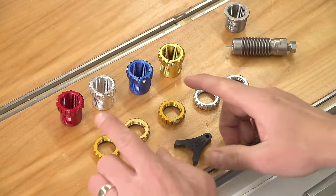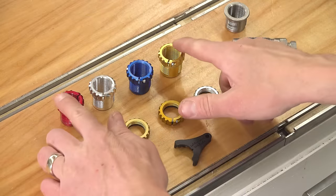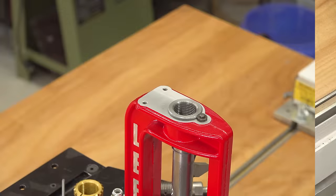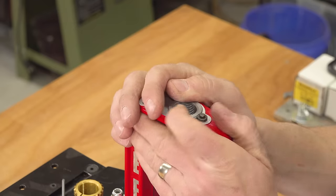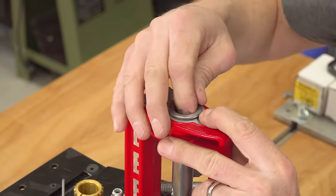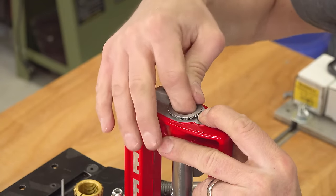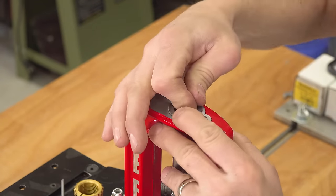Let's see the setup for the Ultimate Lock Rings and the Lock Ring Eliminators. So here I've got the Lee breech lock challenger press.